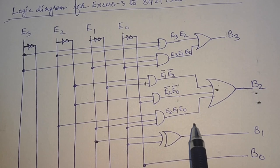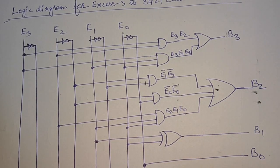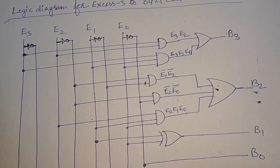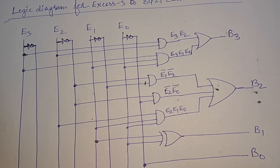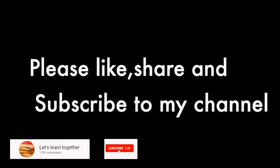This is the logic diagram of XS3 code to 8421 code converter, or XS3 to BCD code converter. Thank you for watching. If you have any questions, please put them in the comment section below. Please also like, share, and subscribe to my channel. Thank you.